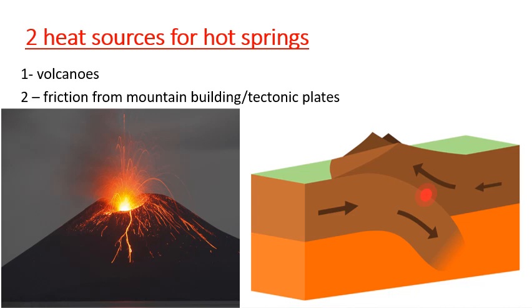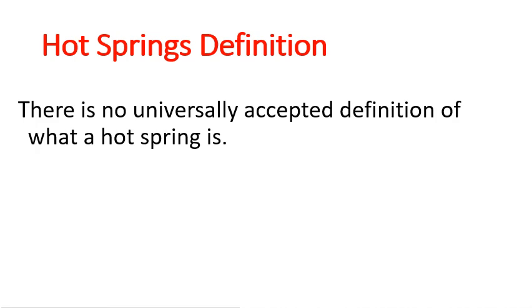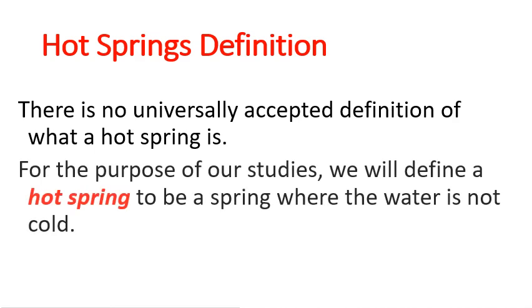There is no universally accepted definition of what makes a hot spring versus a cold spring. For the purposes of this class, a hot spring is any place where the spring water is not cold — because we would expect cold water to come up out of the ground. If it's not what we would consider cold, we're going to call it a hot spring. So how hot do they get?